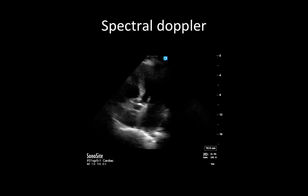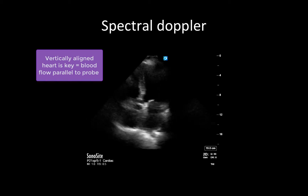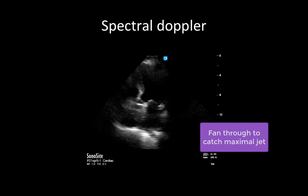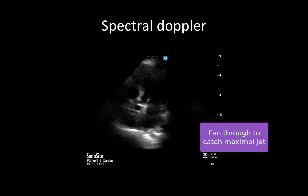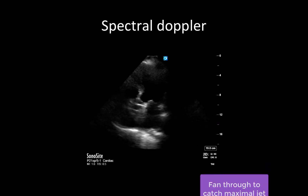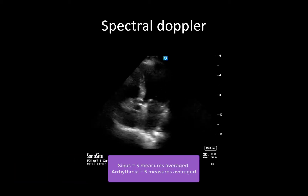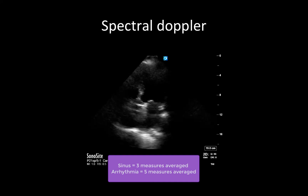As with measuring cardiac outputs, if your image is off-axis and your blood flow is not parallel to the angle of insonation of your probe, you may be underestimating your gradients. In addition, as with measuring LVOT VTIs, it's always a good idea to fan through with small micro-movements as you're measuring a spectral Doppler tracing to make sure that you're catching the biggest and brightest envelope. Finally, for patients in sinus rhythm, we should ideally be measuring 3 times and then taking an average. For patients in an irregular rhythm, such as atrial fibrillation, 5 measurements should be averaged.